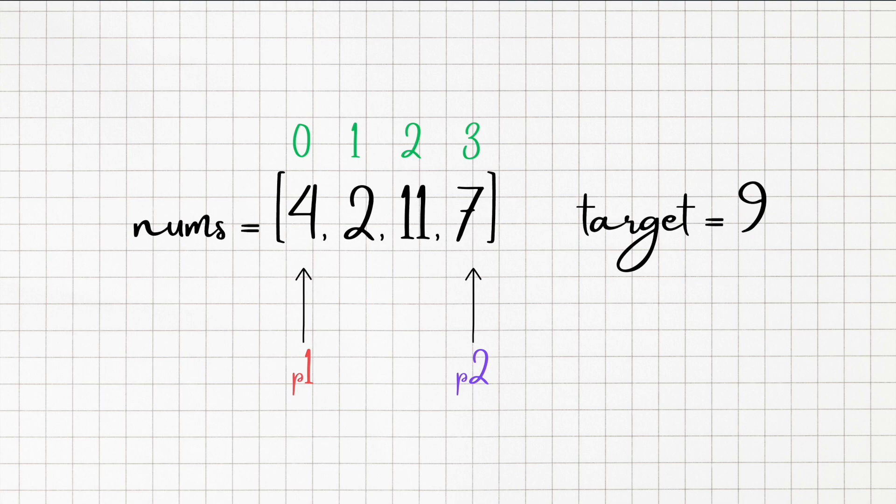So now we move our pointer 1 to the first index, and we compare the second value which is 2 with all other numbers. We see that 2 plus 11 is 13, which is not our target value.